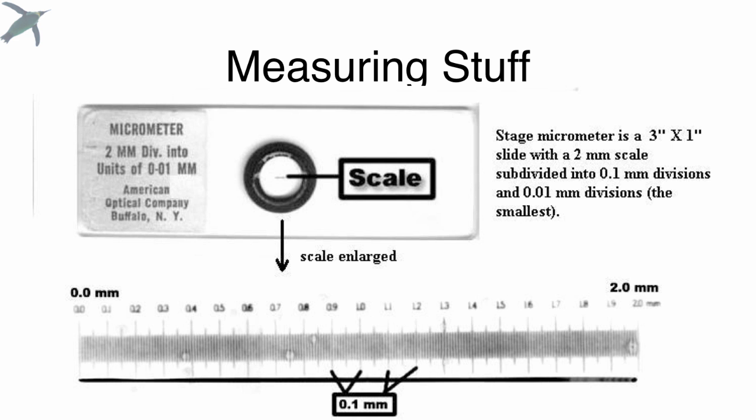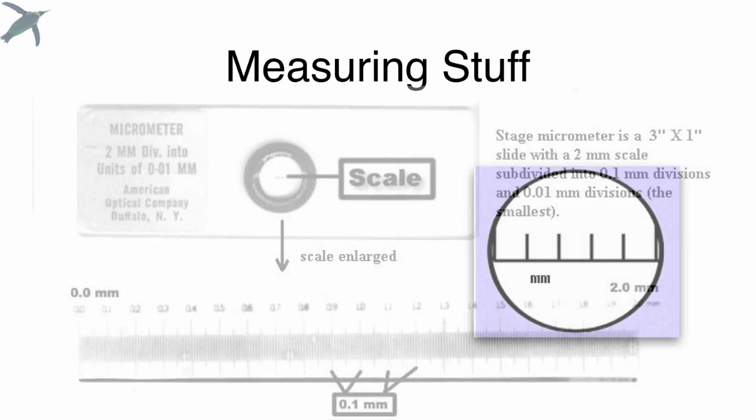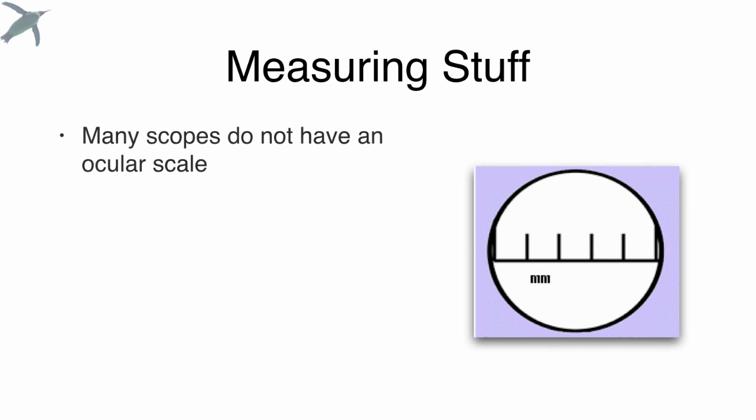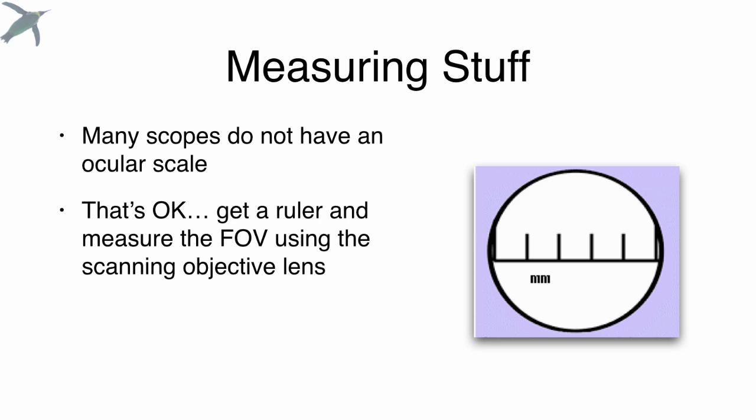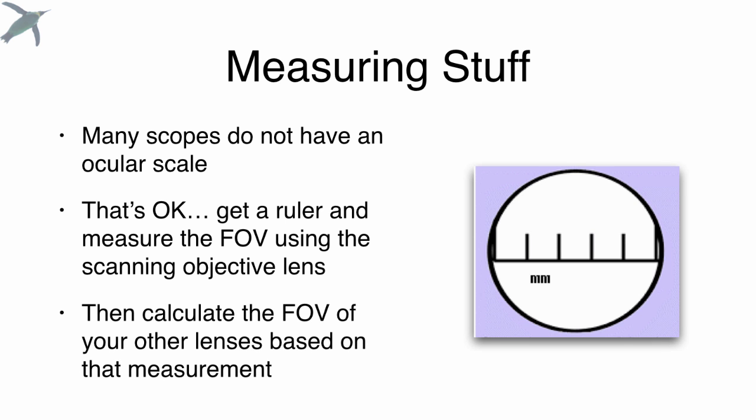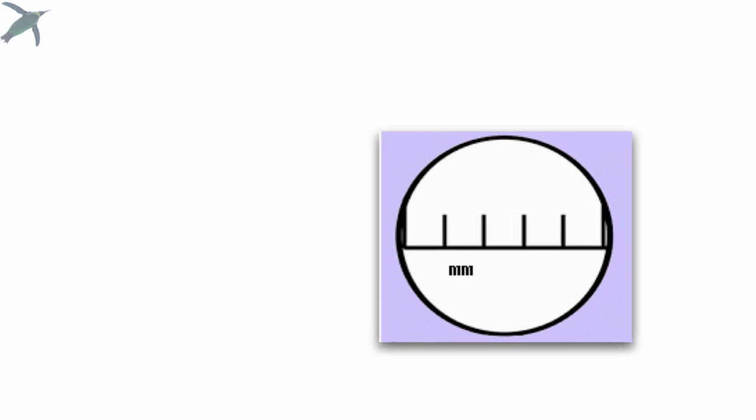All you need is a small, clear, plastic metric ruler. And what you're going to do is measure the field of view under the scanning objective lens. And then based on that, you will be able to calculate the field of view for all your other lenses. So I want to show you how to do that.